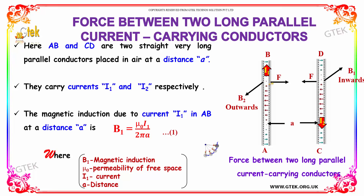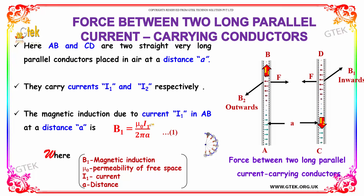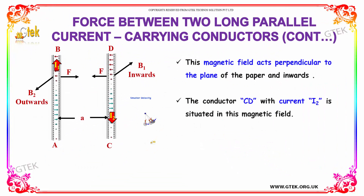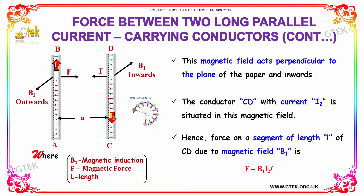The magnetic induction due to the current I1 in AB at a distance A is given by B1 equal to μ₀ into I1 divided by 2πA, where μ₀ is the permeability of free space, I1 is the current, and A is the distance. This magnetic field acts perpendicular to the plane of the paper and acts inwards.